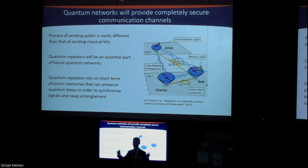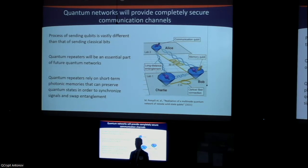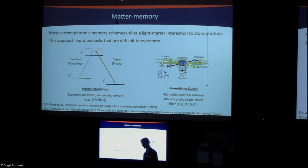There will be a bunch of repeater nodes along the way that swap entanglement so that Alice and Bob on the two far ends of the link can share a common entangled state. This whole process of synchronization and entanglement swapping relies very heavily on the Hong-Ou-Mandel effect, where you have to have really precise synchronization of your photons. This synchronization can be bolstered significantly by making use of quantum memory technologies.